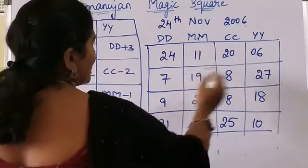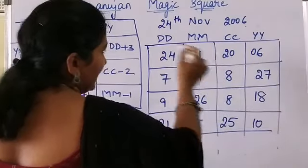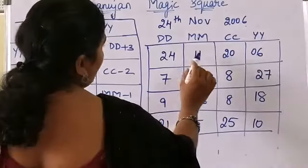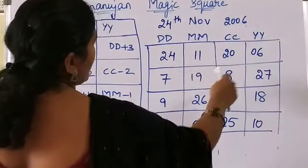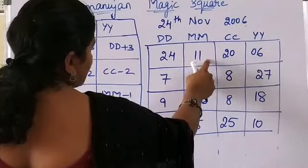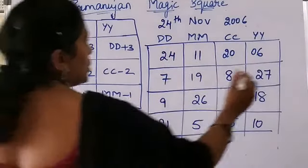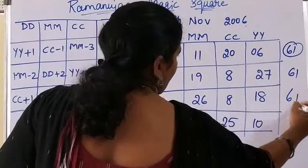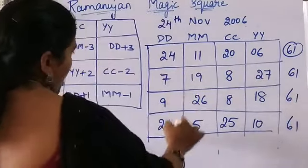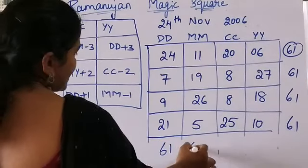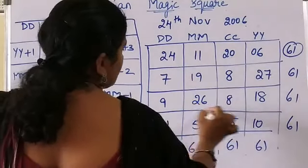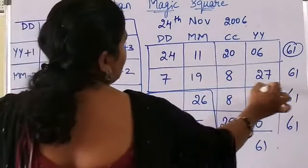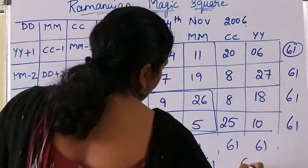By using the date of birth 24th November 2006, I have created a magic square. If you add all the rows and columns — diagonally and the middle boxes — you will get the same answer. Let's check: 24 plus 11 plus 20 plus 6 gives 61. When you add all the rows, you will get 61. If you add all the columns, you will get 61. The middle four and other groupings also give 61.